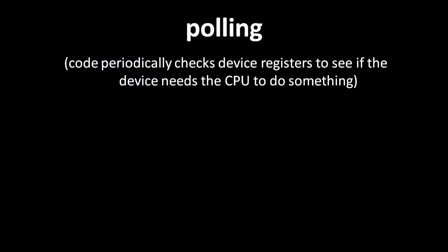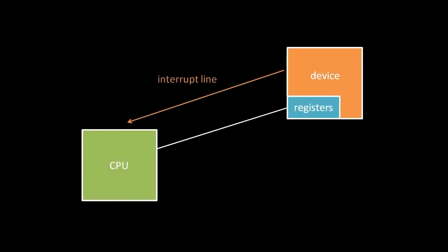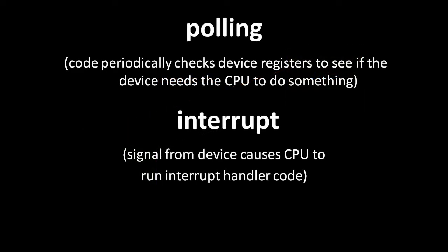As an I/O device operates, it may periodically want attention from code running on the CPU. The simplest strategy is called polling, in which the code on the CPU periodically checks the device registers to see if the device wants attention. The obvious problem with polling is that these periodic checks waste the CPU's time when the device needs no attention, so far better if the device could directly notify the CPU when it needs attention — which is the idea behind interrupts. An interrupt line is a circuit path running from the device to the CPU over which the device can signal that it wants attention. When receiving this signal, the CPU temporarily sets aside what it's doing to run the interrupt handler, a piece of operating system code associated with that interrupt line.